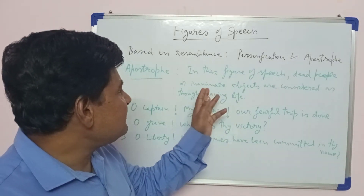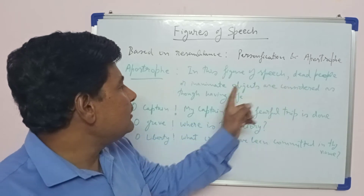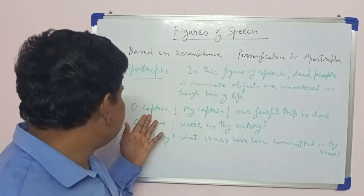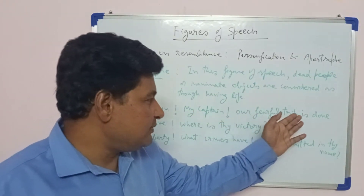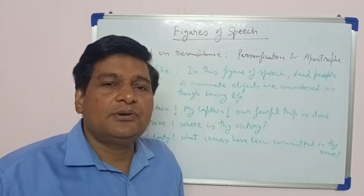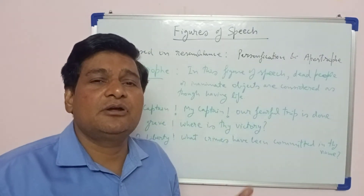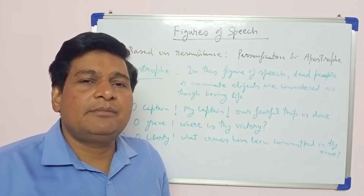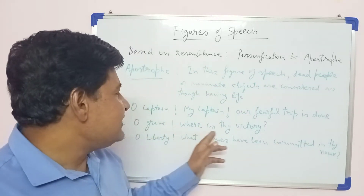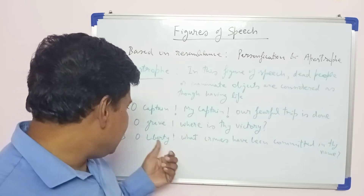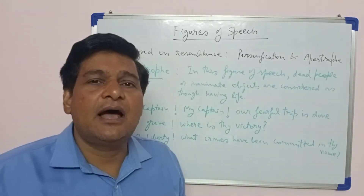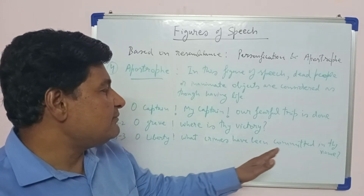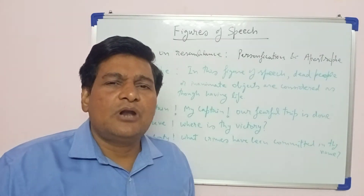To recap: in apostrophe, dead people or inanimate objects are considered as having life. 'Oh captain, my captain, our fearful trip is done' — written in memory of Abraham Lincoln by Walt Whitman. 'O grave, where is thy victory' — grave is addressed as having life. 'O liberty' — liberty is an abstract idea considered as having life.